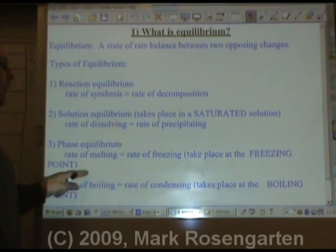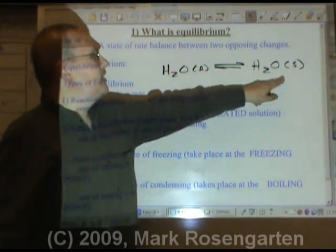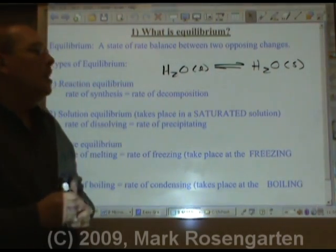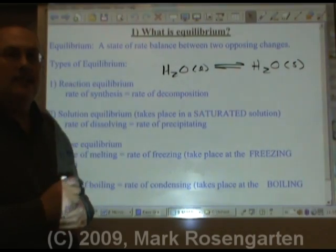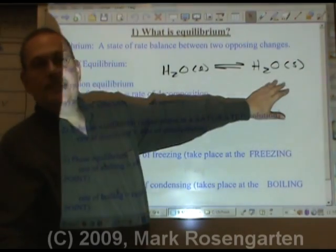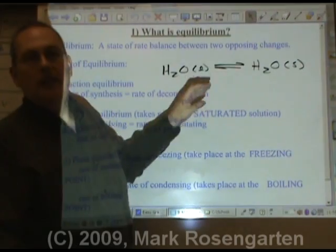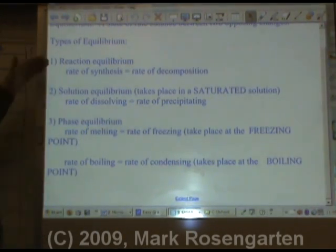Phase equilibrium is where the rate of melting equals the rate of freezing at the freezing point, which is the same as the melting point. Water turns from a liquid to a solid at the same rate it turns from a solid back into a liquid. When you put an ice cube in water exactly at the melting point — zero degrees Celsius — the ice melts at the same rate that the liquid water freezes, so it looks like you're staying with exactly the same amount of ice and liquid forever. Those are your three basic kinds of equilibrium: reaction, solution, and phase equilibrium.